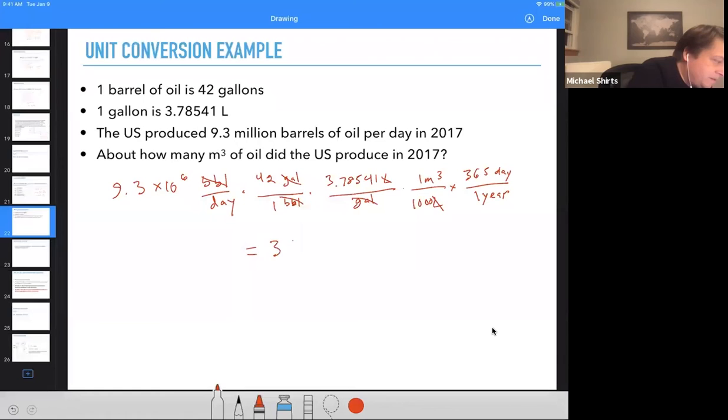Now clearly this is way too many significant digits. Looking at this, we're actually limited by the number of significant digits in 9.3. 42 gallons is exact, 3.78541 liters is exact by definition, and days per year, that's exact as well. The limiting factor is the two significant digits in our initial number. So this, and then we want to convert to scientific notation so it's unambiguous. One, two, three, four, five, six, seven, eight. The answer is 5.4 times 10 to the eighth cubic meters per year.